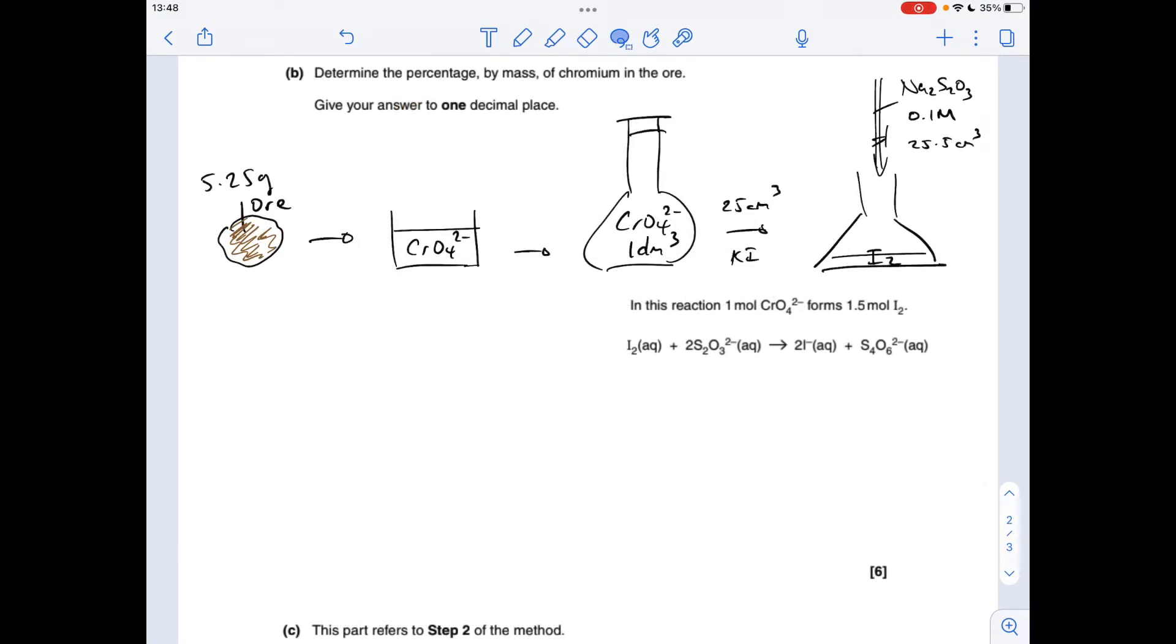So moving on to this calculation now, I've summarized the procedure in my sort of traditional way in these diagrams, so I'll talk through that as I go through the calculation. The important information from above: we're told that in this reaction, when the 25 cm cubed of this is taken out and the excess KI is added, it forms iodine. So the iodine's in there—the ratio is one mole of that forms one and a half moles of I₂. Now we see the titration's carried out on that.